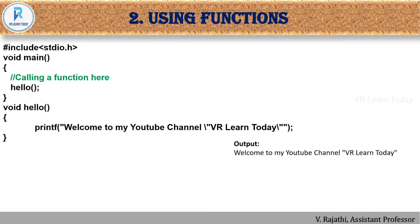Next, using a function — here we are printing a sentence using a function. Inside the main function, we call a function named 'hello'. The compiler searches for that function and inside it we have printf with 'Welcome to my YouTube channel, We All Learn Today'. Also, if you want to print double quotes in the output screen, you need to use a backslash followed by double quotes — '\"' — both at the start and end of the text.